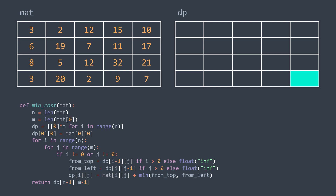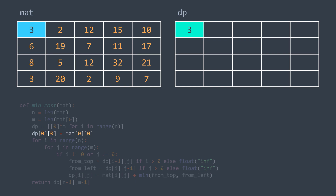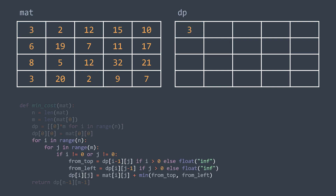To fill the dp matrix, we start with the smallest possible subproblem: the cost of going from the top-left cell to itself, which is the cost of the top-left cell. So dp[0][0] = mat[0][0]. For remaining cells, the logic is to get the minimum cost between coming from the top and coming from the left, since those are the only two cells that can lead to cell (i, j).